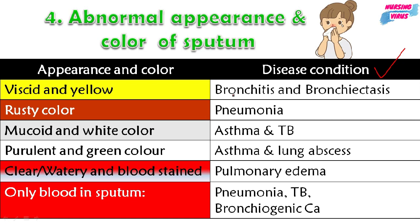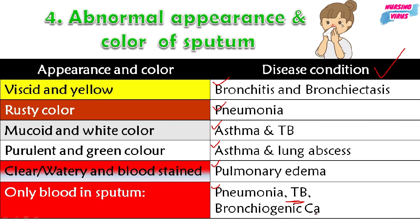The fourth topic is the abnormal appearance and color of sputum. Viscid and yellow color sputum indicates infectious conditions such as bronchitis or bronchiectasis. Rust color sputum indicates pneumonia. Mucoid and white color sputum is seen in asthma or tuberculosis. Purulent and green color sputum is seen in asthma and lung abscess. Clear and watery or blood-stained sputum is seen in pulmonary edema. Blood-stained sputum alone indicates pneumonia, tuberculosis, or bronchogenic carcinoma.